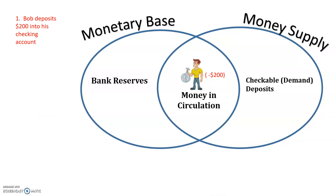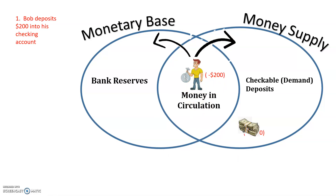Here's a scenario. Bob deposits $200 into his checking account. When he deposits that money into his checking account, he's taking it from money that's in circulation. And it goes into two places — first, it goes into his checkable deposits.